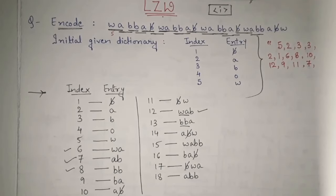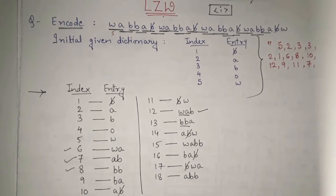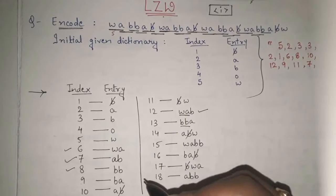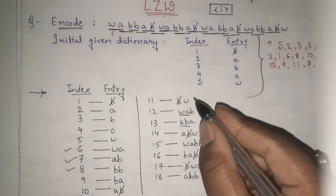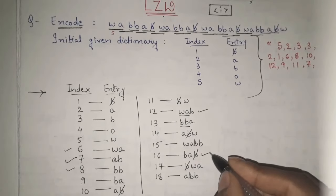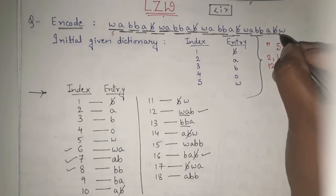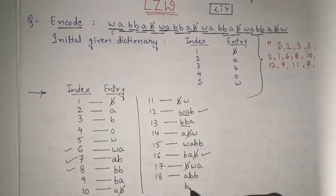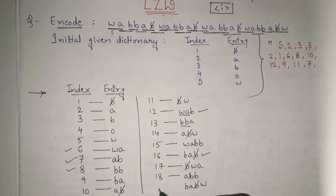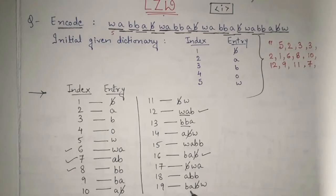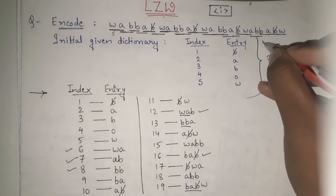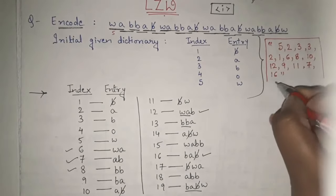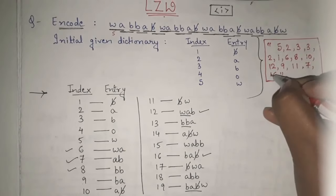After ABB, we have BA — already present. Then BA B-blank is already present, so I take all four characters: BA B-blank W at index 19. I send the code for BA B-blank, which is 16. So the final encoded sequence is: 5, 2, 3, 3, 2, 1, 6, 8, 2, 10, 12, 9, 11, 7, 16. This is my encoded sequence of the given input, encoded with the help of LZW.